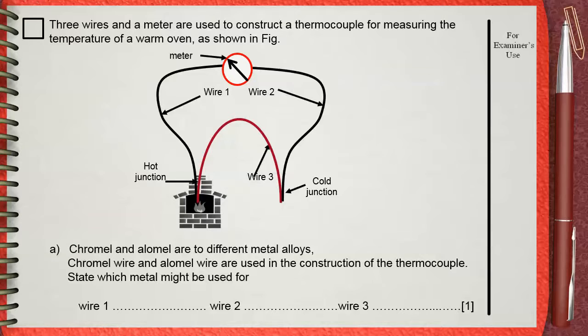So we can say wire one alumel, wire two also will be alumel, wire three will be chromel. Also, the opposite will be correct.